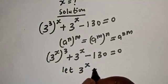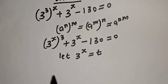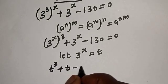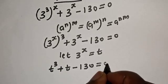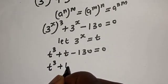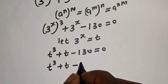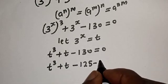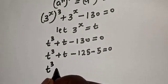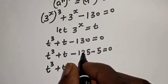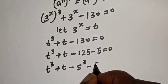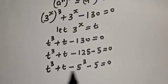Let 3 raised to power s equal t. Now we have t raised to power 3 plus t minus 130 is equal to zero. Now, 130 can be written as 125 plus 5. So this becomes t raised to power 3 plus t minus 125 minus 5 is equal to zero. Note that 125 can be written as 5 raised to power 3.